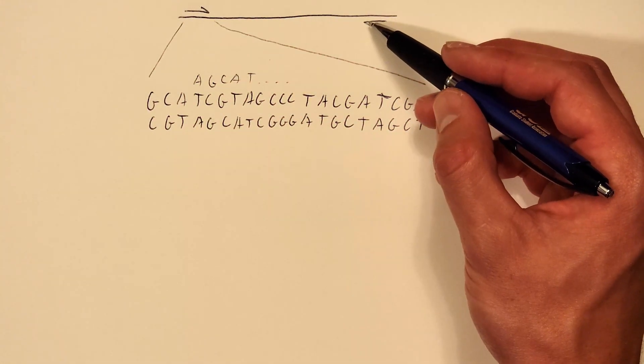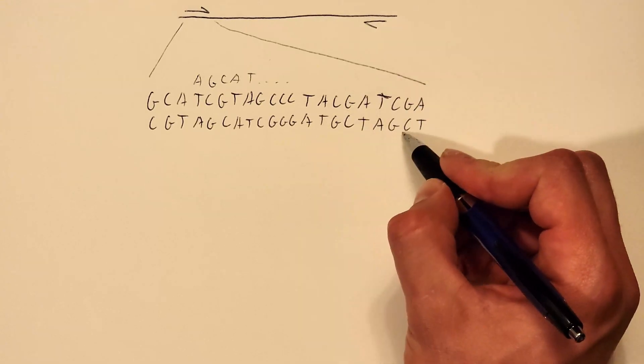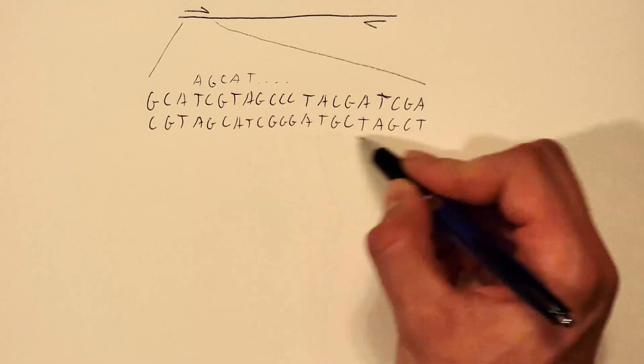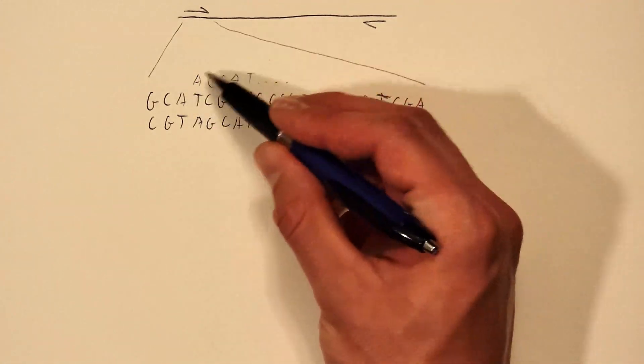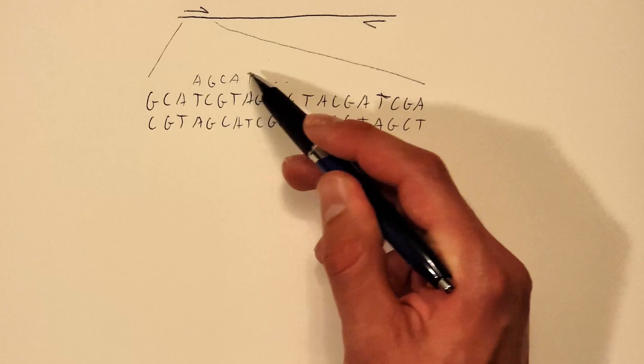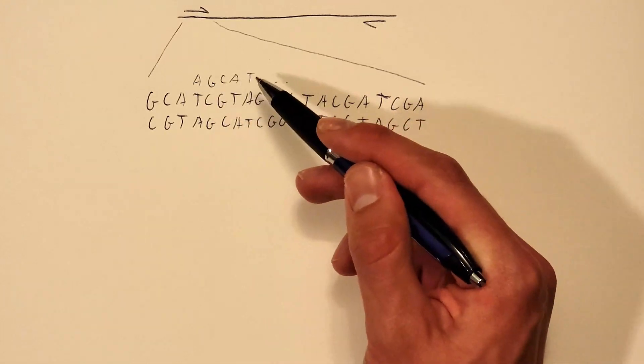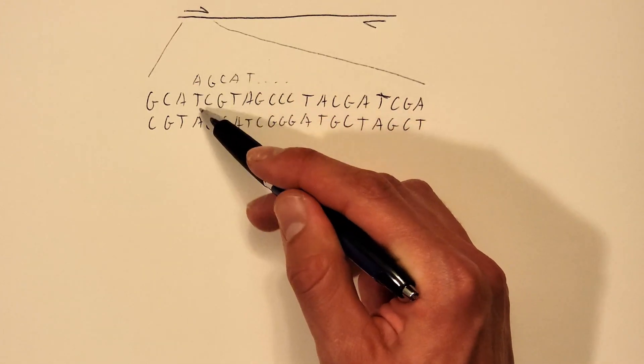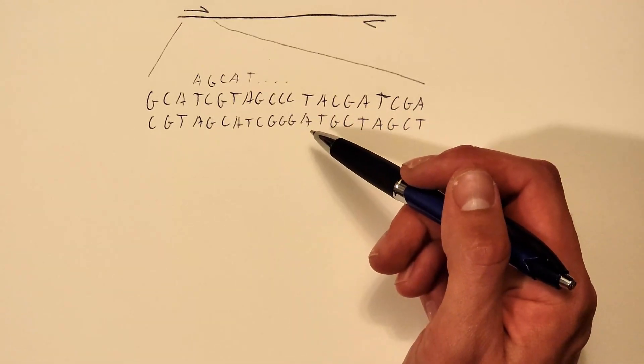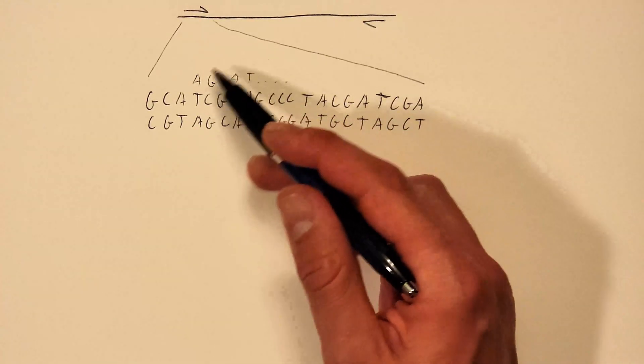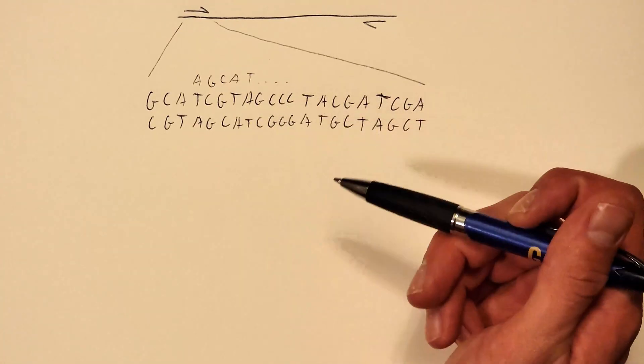And similarly if we were designing a reverse primer it would be complementary to the bottom strand of this DNA sequence. And when you actually order these primers from DNA synthesis companies they come single-stranded. They're not double-stranded. They're meant to bind to one strand of DNA and amplify in a particular direction. So primers are single-stranded pieces of DNA.